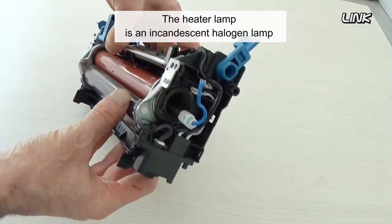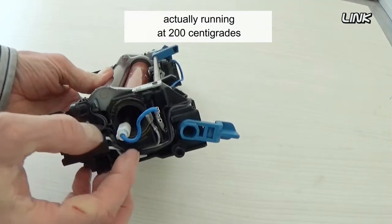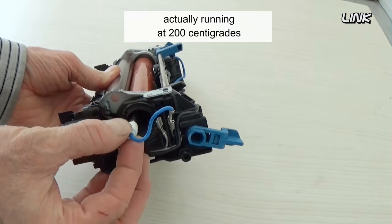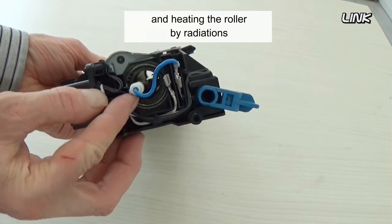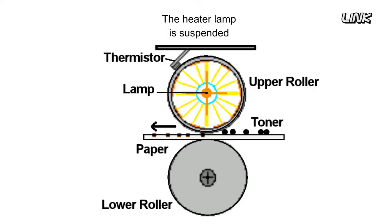The heater lamp is an incandescent halogen lamp running at 200 degrees centigrade and heating the roller by radiation. The heater lamp is suspended in the center of the upper fuser roller. The upper fuser roller is an aluminum hollow tube.